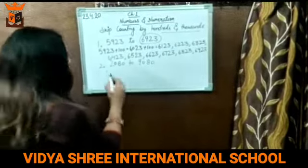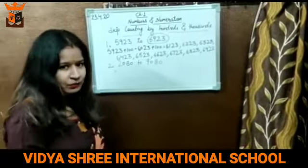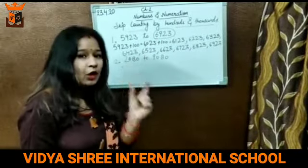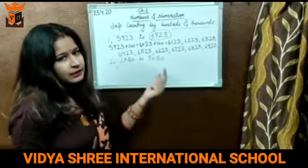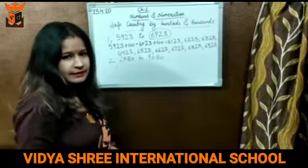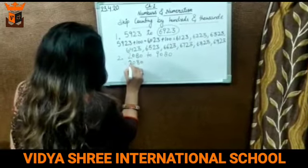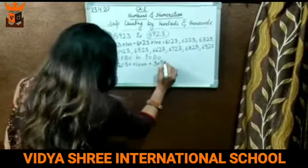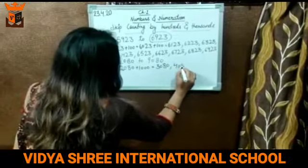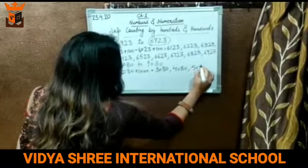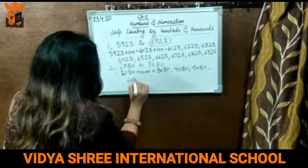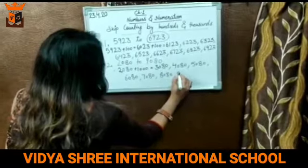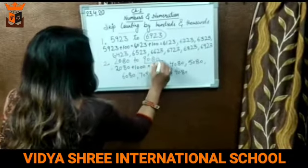Skip counting by 1000 from 2080 to 9080. When the question is asking for skip counting by 1000, you have to add 1000 to the previous number to get the next number. Starting from the first number 2080, add 1000, you will get 3080. Again add 1000, you will get 4080. Then 5080, 6080, 7080, 8080, and the last number is 9080, which is the requirement of the question.